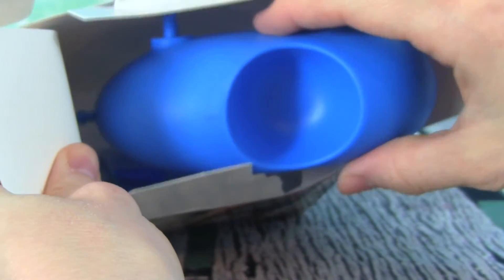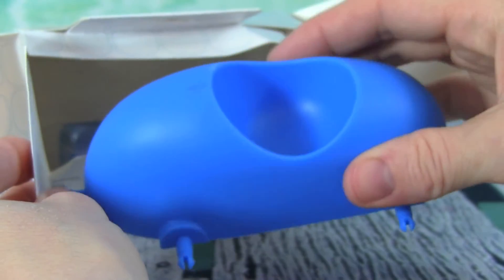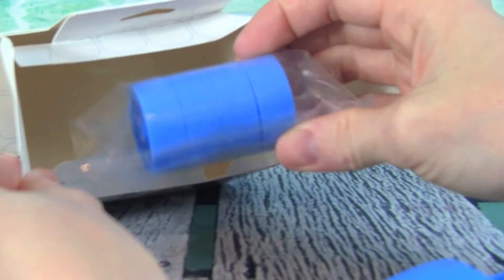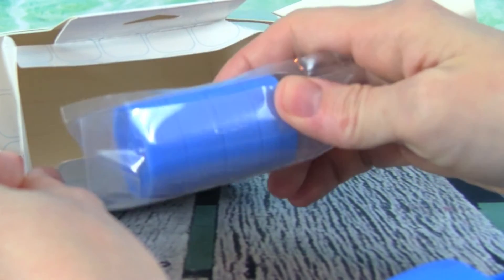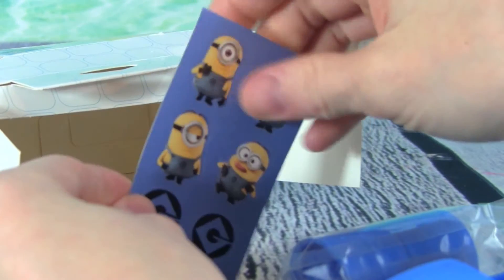Oh my gosh, look at our Egg Racer. That is super cool. Let's see what else is in here. We have our wheels to put on our Egg Racer and we have our Minions stickers.